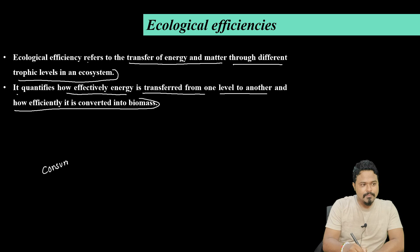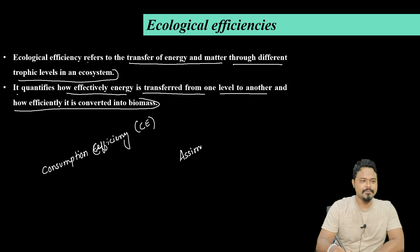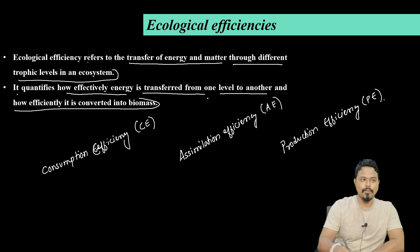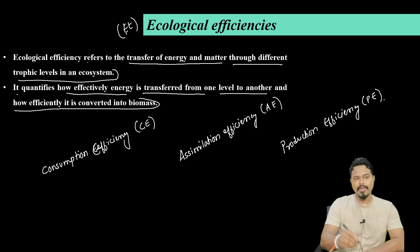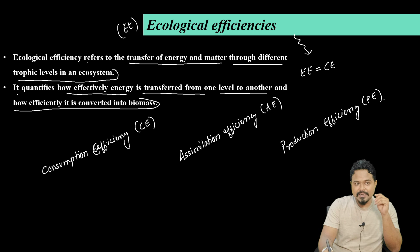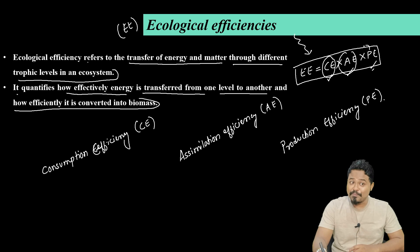There are important terms to know. First is Consumption Efficiency (CE). Next is Assimilation Efficiency (AE). Then Production Efficiency (PE). And Ecological Efficiency (EE). The mathematical formula for ecological efficiency is: EE = CE × AE × PE. So ecological efficiency is the product of consumption efficiency, assimilation efficiency, and production efficiency.